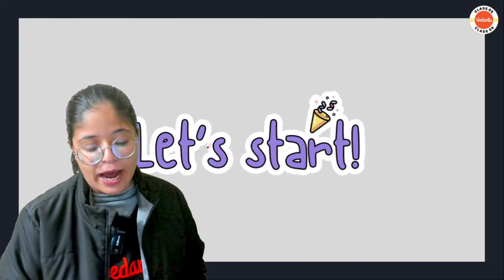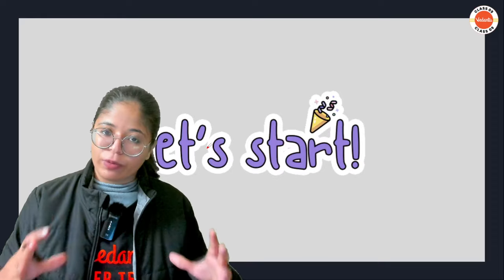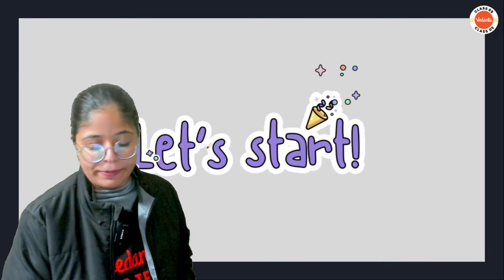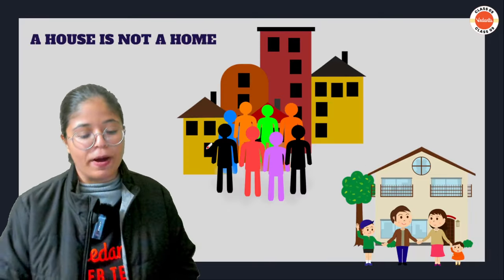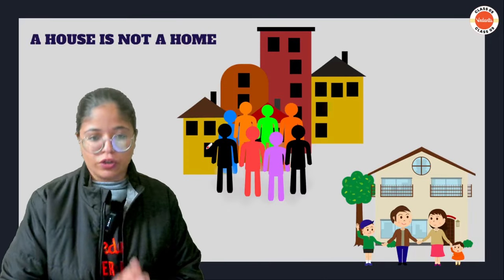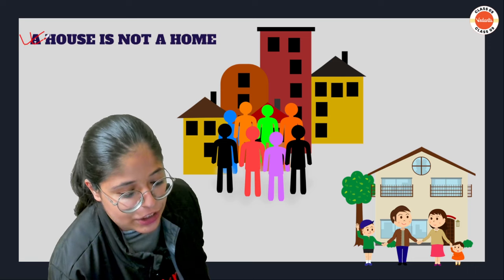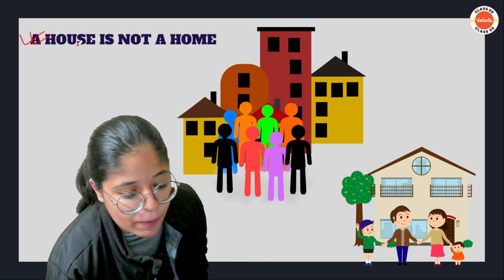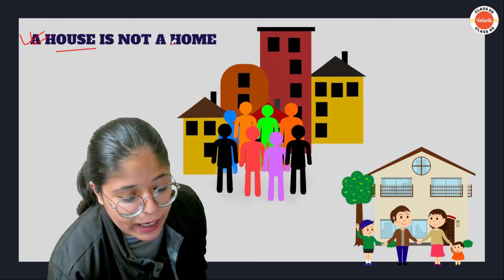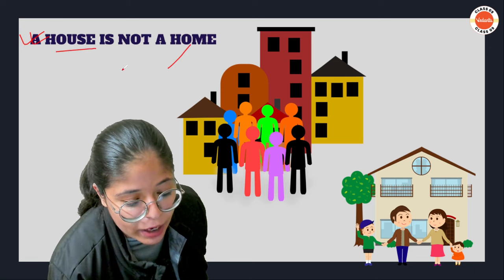Now let's start with the summary of the chapter itself. 'A House is Not a Home' — as the title suggests, this tells you the difference between a house and a home.